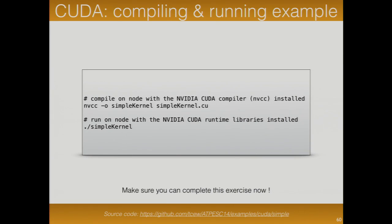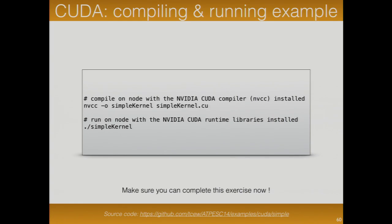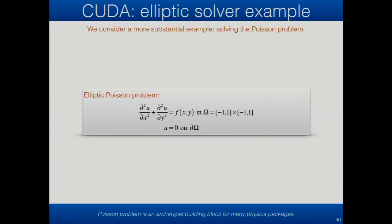Hopefully, how many people have managed to run the example now? Keep trying to get on there. So now, just to up the ante a little bit, we've gone from a pretty stupid example where we're just taking an array and filling it entry by entry with a thread for each entry. Let's do something a little bit more complicated — which is a setup of a finite difference discretization of an elliptic Poisson problem.